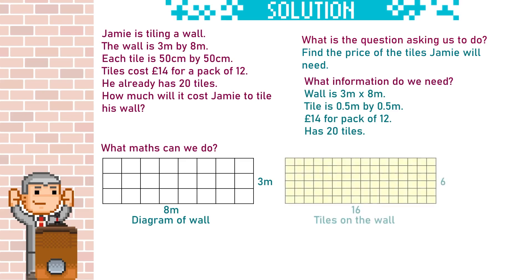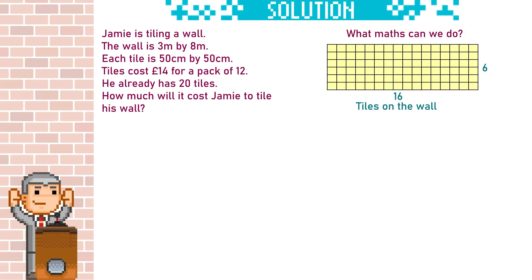I'm going to draw a diagram for that and copy it out to get a bit more space. Next we need to ask how many tiles there are in total. There are 16 across and 6 up, so that's 16 times 6 — 96 tiles in total.